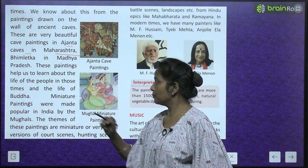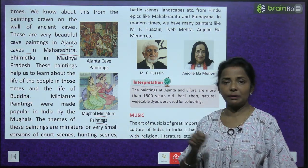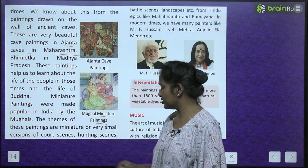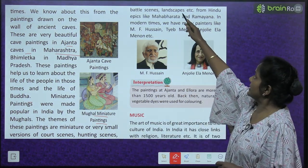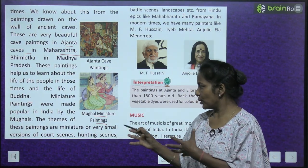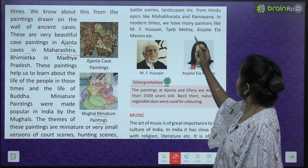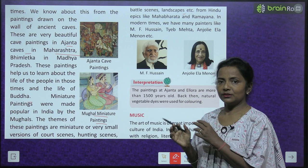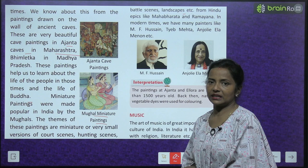Miniature paintings were made popular in India by the Mughals. The themes of these paintings include a very small version of court scenes, hunting scenes, battle scenes, landscapes, etc. Miniature ka matlab hota hai chota — a small version of all these things. These paintings also drew from Hindu epics like the Mahabharata and Ramayana.